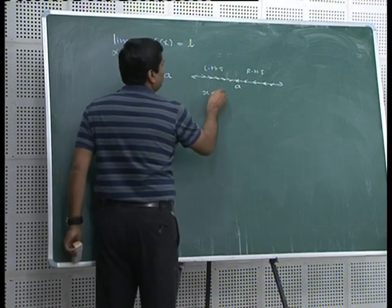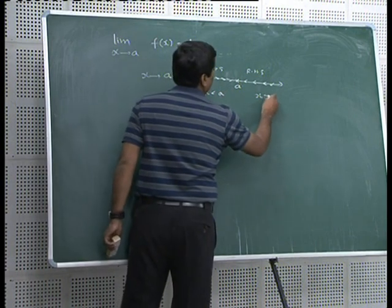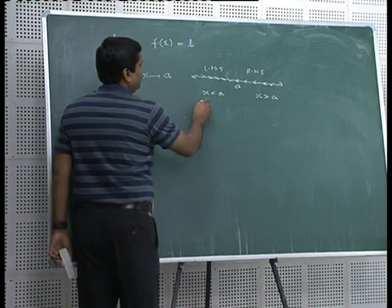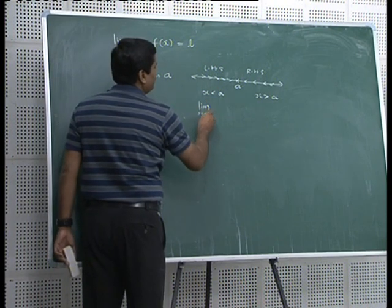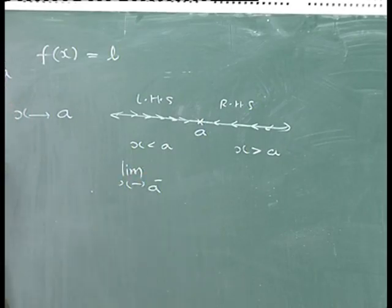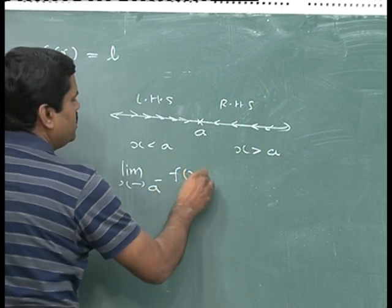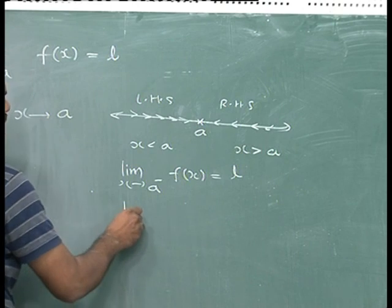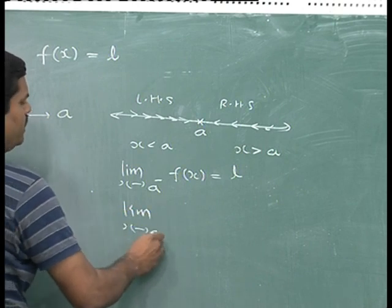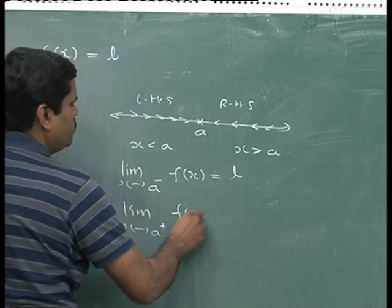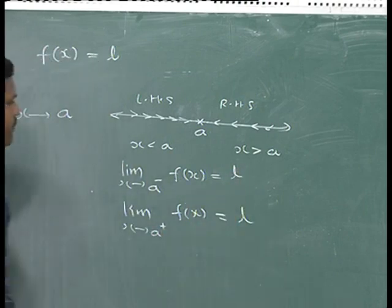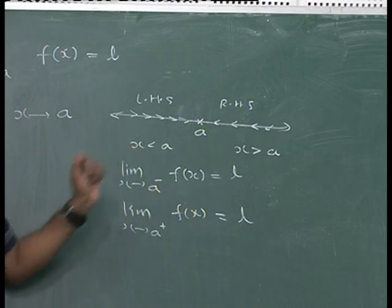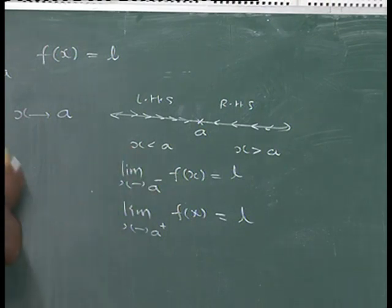x from the left-hand side means x is less than a, and from the right-hand side means x is greater than a. If x remains less than a, we call it the left-hand limit: limit x tends to a⁻ of f(x) equals l. Similarly, if x is greater than a, we call it the right-hand limit: limit x tends to a⁺ of f(x) equals l. So there are only two possible directions.